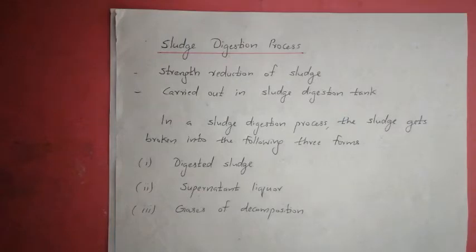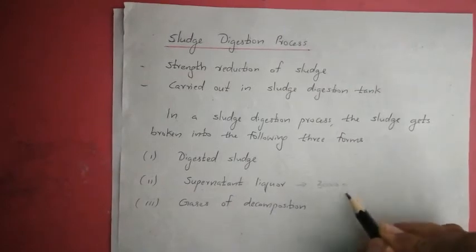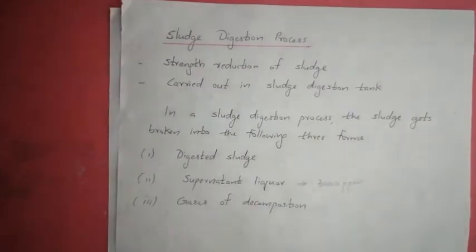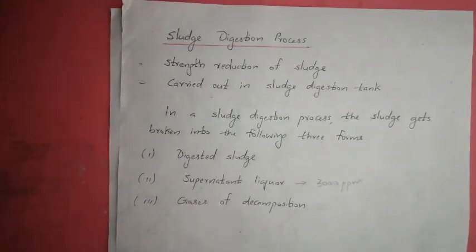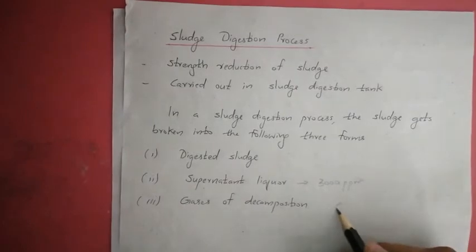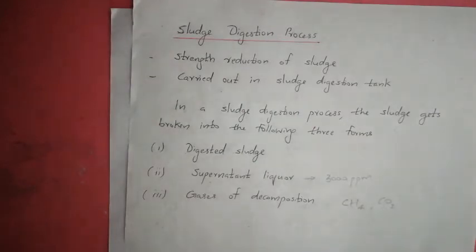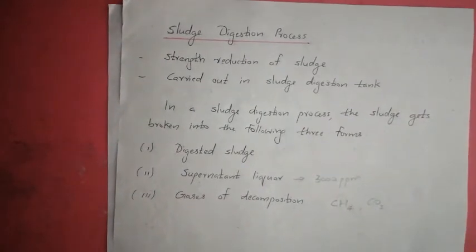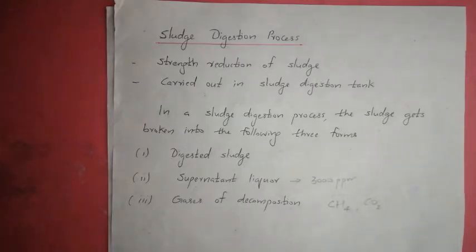The BOD range of supernatant liquor is about 3,000 parts per million. The last product is the gases of decomposition, which include gases like methane (CH4), carbon dioxide, nitrogen, and hydrogen sulfide. So the sludge digestion process produces three forms: digested sludge, supernatant liquor, and gases of decomposition.